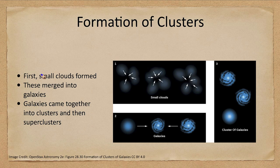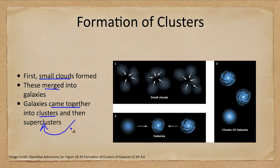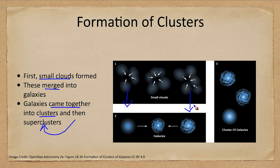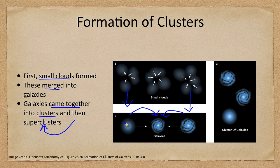How do we form a cluster? First, small clouds formed and merged to form galaxies. Galaxies then came together into clusters and then super clusters, eventually giving us the filaments and voids we see today. So small clouds formed together into various galaxies — whether spiral or elliptical depending on how those clouds combined — and then those galaxies merged to form larger galaxies and eventually grouped into clusters and filaments.